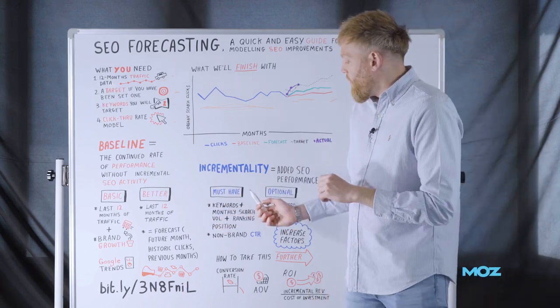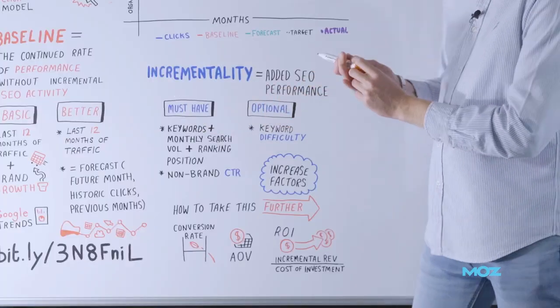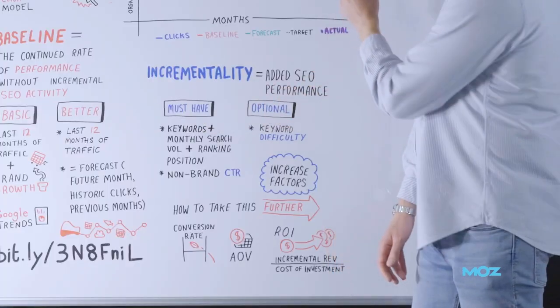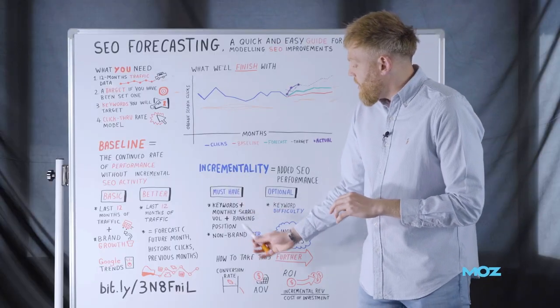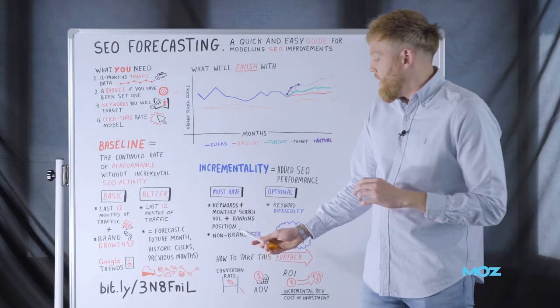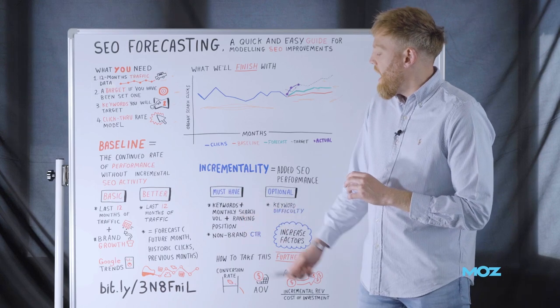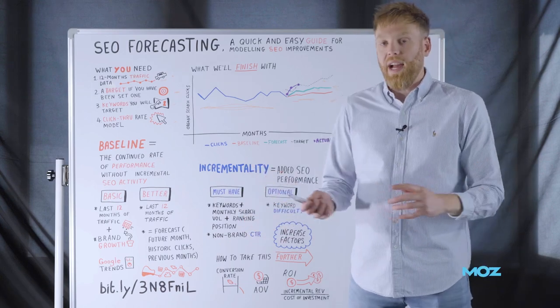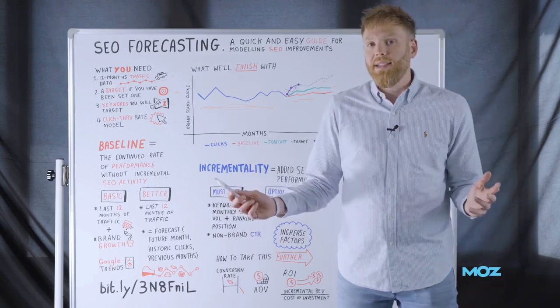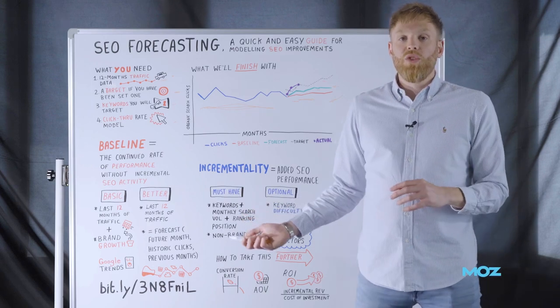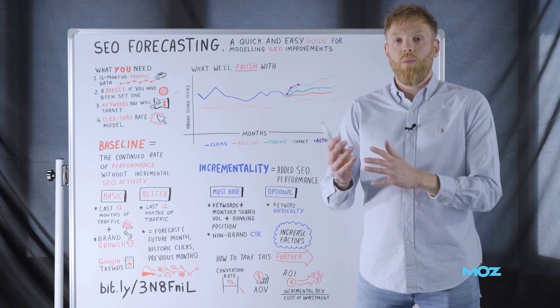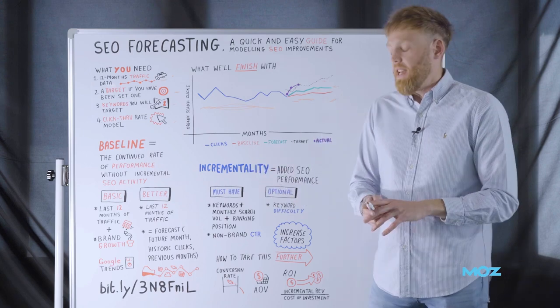Now we move on to incrementality. So how do we begin to influence this green line here? There's two things that we must have in order to do this. The keywords that we're targeting as part of our campaign. We need to collect with those keywords the monthly search volume and also the current ranking position. Where are those keywords currently ranking in search?